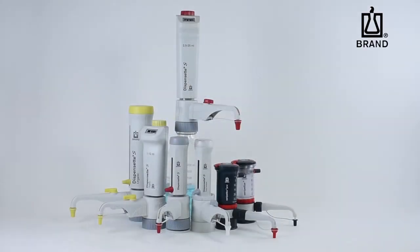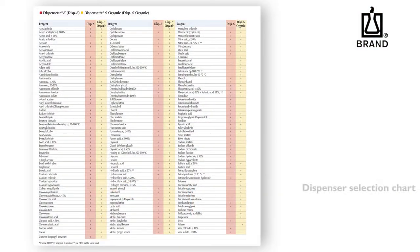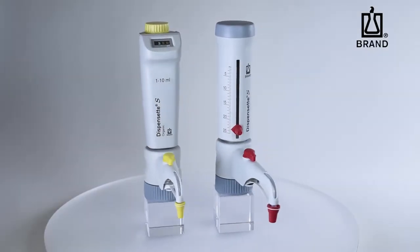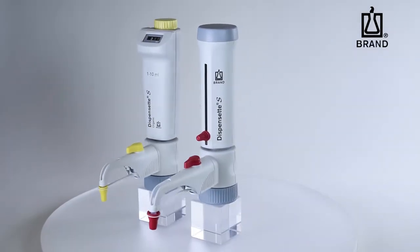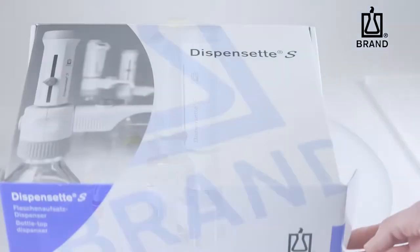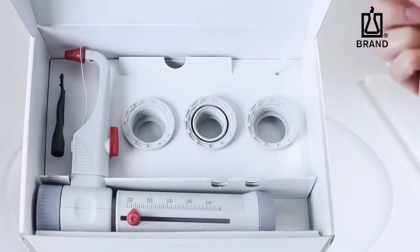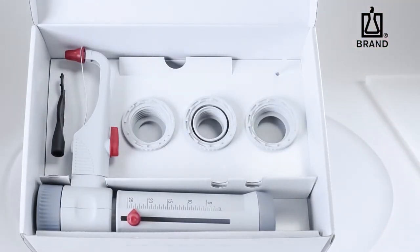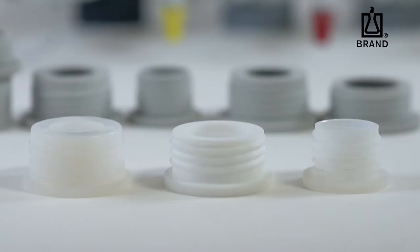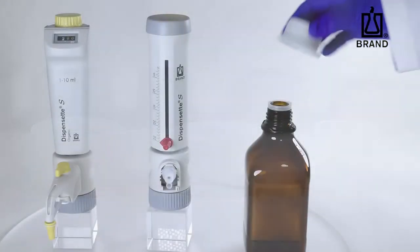Models are available for most laboratory reagents. The Dispenset S and Dispenset S Organic both have 45 mm threads. They are also supplied with a selection of thread adapters to fit most common laboratory bottles. Select the appropriate adapter and apply it to your bottle.